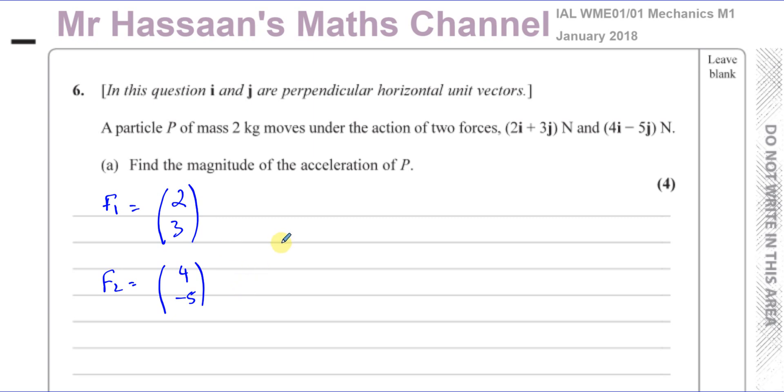So we want to find the magnitude of the acceleration of P under these two forces. We know that the resultant force is equal to the mass times acceleration. The resultant force of two forces which are given in vector form is basically the sum of those two forces. So I just have to add 2, 3 with 4, negative 5. That's going to give us 6 and negative 2.